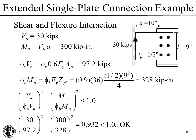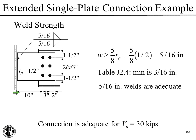Finally, for the weld strength, again we don't calculate the strength explicitly. We just need the weld size W to be at least 5/8 times the plate thickness: 5/8 × 1/2 inch = 5/16 inch. Checking Table J2.4, the minimum weld size is only 3/16 inch, so our 5/16-inch welds are adequate. The welds will develop the plate, and since the plate is strong enough for the loads, the weld will certainly resist them. Overall, the connection is okay for the required shear of 30 kips.